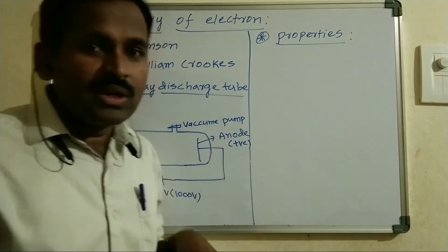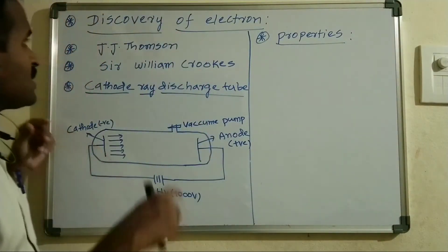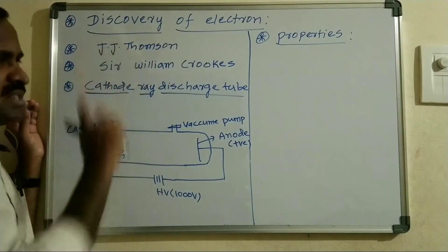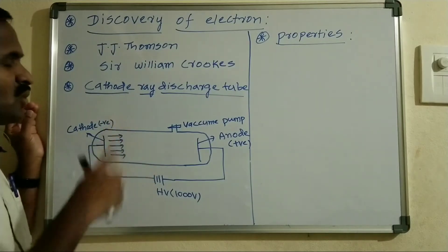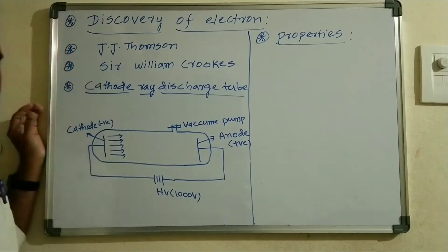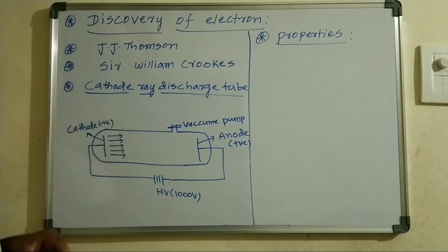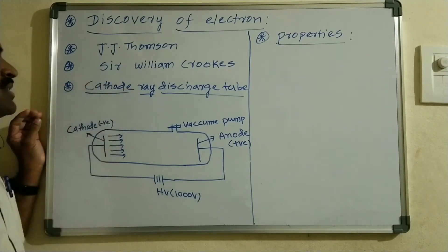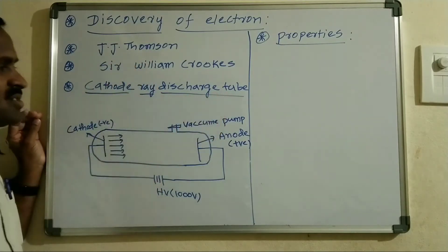I am going to discuss the discovery of electron. This discovery was done by J.J. Thompson, based on the cathode ray discharge tube experiment. The discharge tube was designed by a scientist called Sir William Crookes.